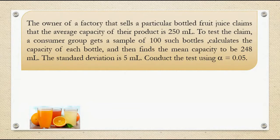The owner of a factory that sells a particular bottled fruit juice claims that the average capacity of their product is 250 ml. To test the claim, a consumer group gets a sample of 100 such bottles, calculates the capacity of each bottle, and finds the mean capacity to be 248 ml. The standard deviation is 5 ml. Conduct the test using alpha, the level of significance, which is 0.05.